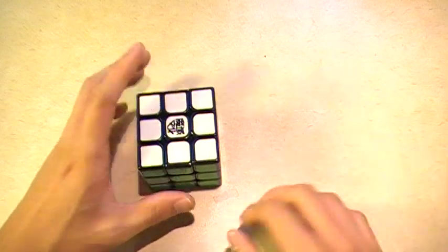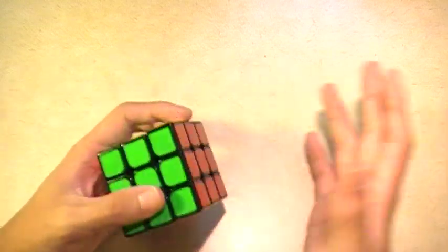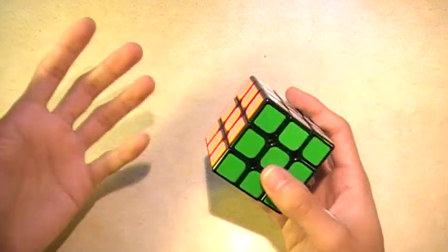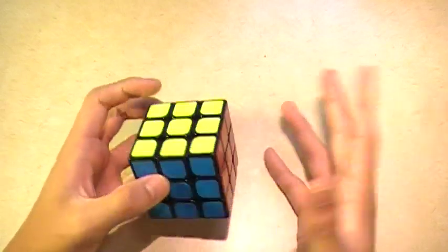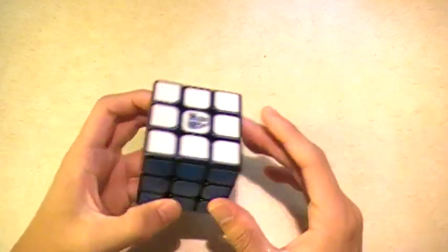They usually cut around the same. One cube may cut a little more than the other, and the other cube may cut a little less. But overall, on average, they're usually the same amount of corner cutting, except for the Fangshi Guangying. That's completely different though.